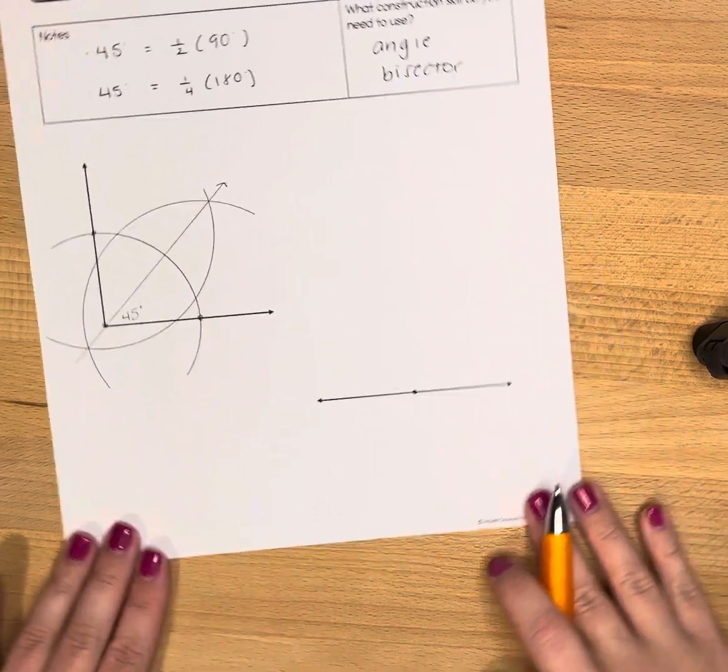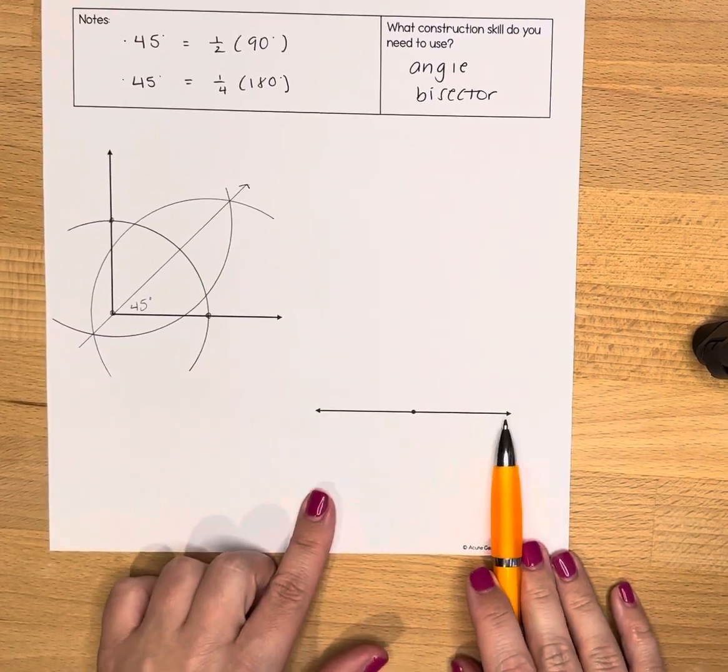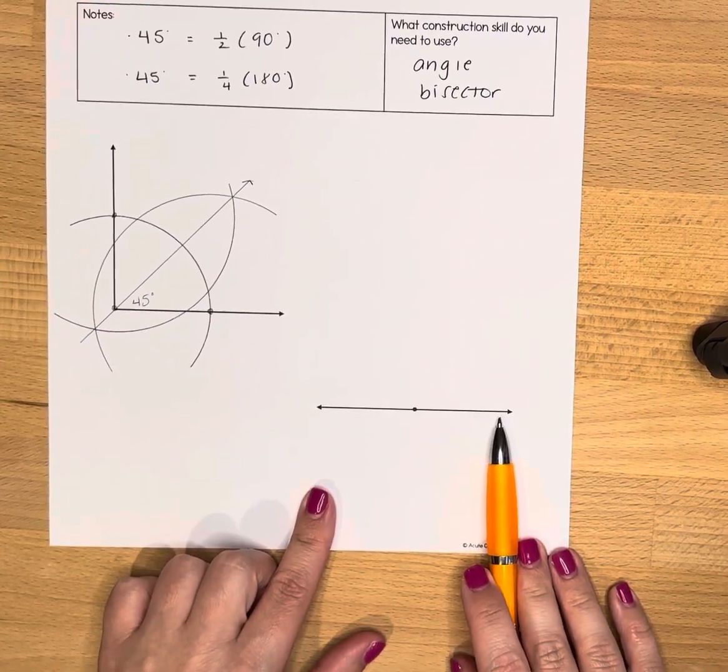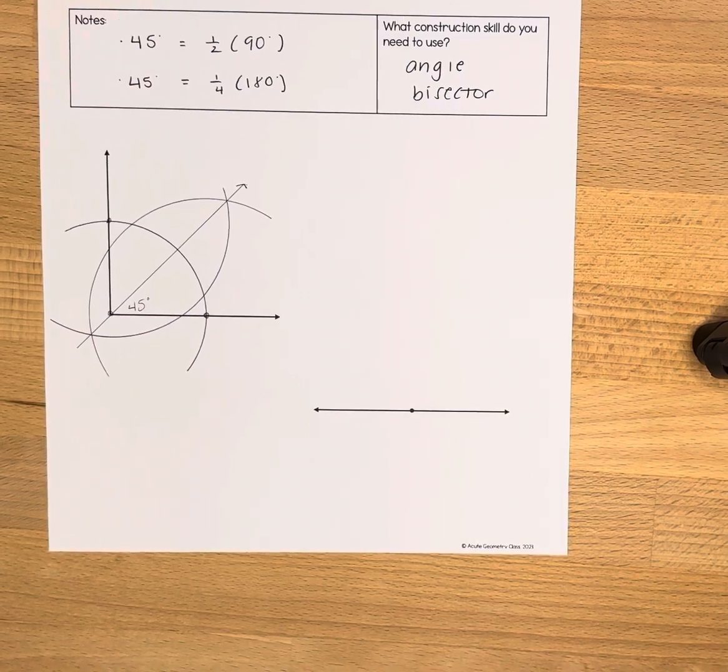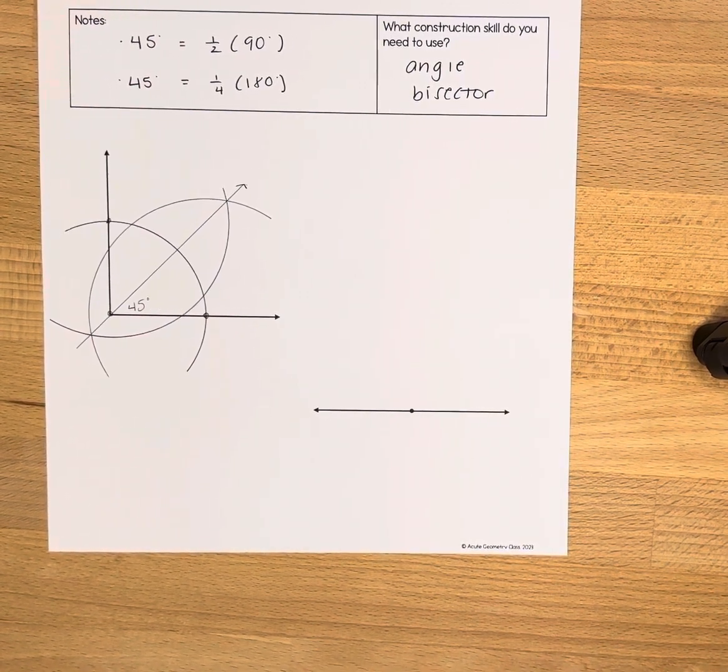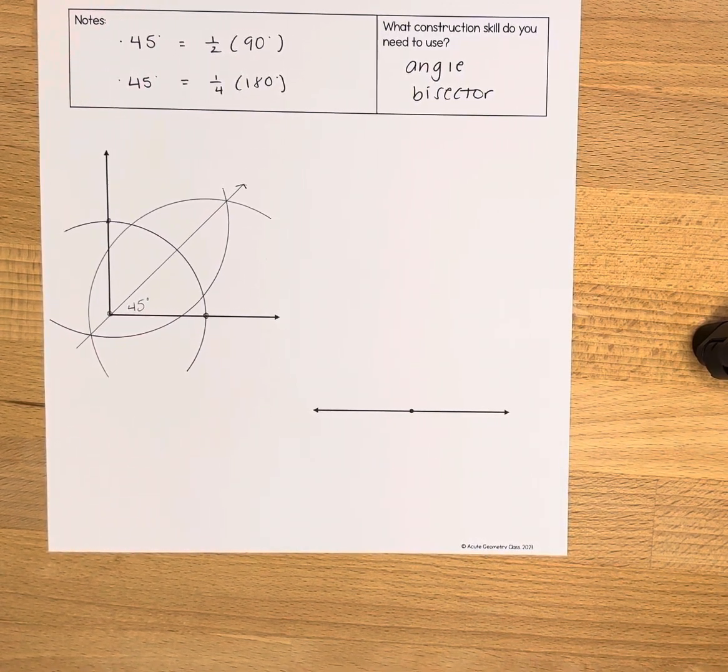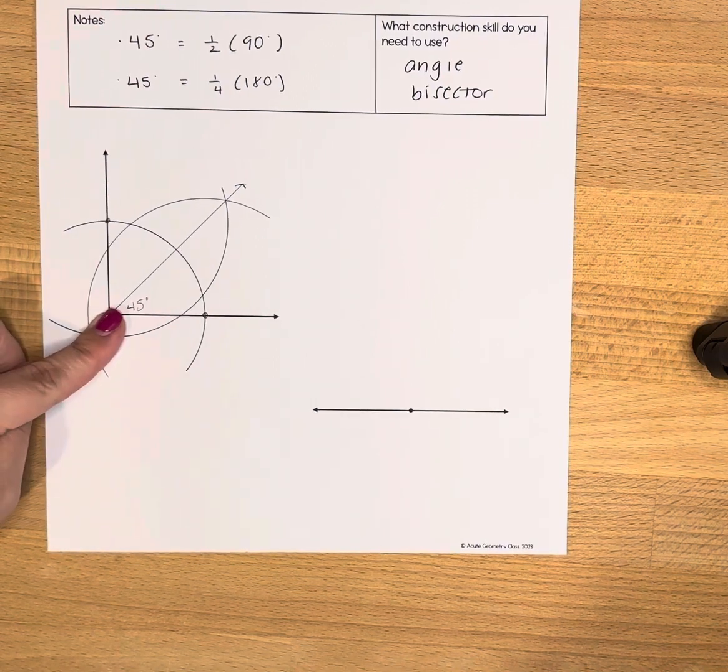Now what happens if we have a 180-degree angle, a straight angle? We're going to have to bisect this angle twice now. When we divide it in half we're going to get 90-degree angles, and then we're going to be back to where we were before.